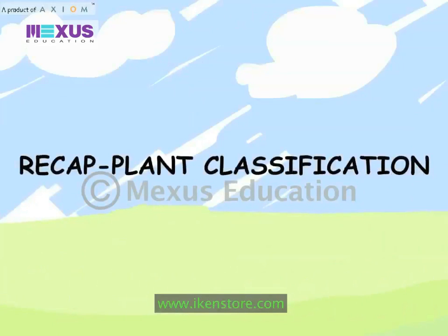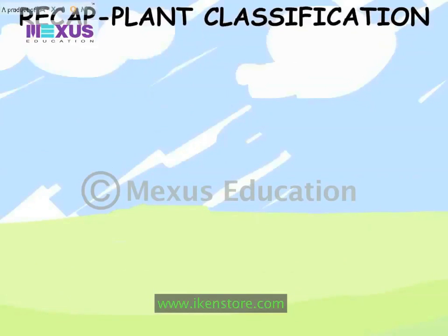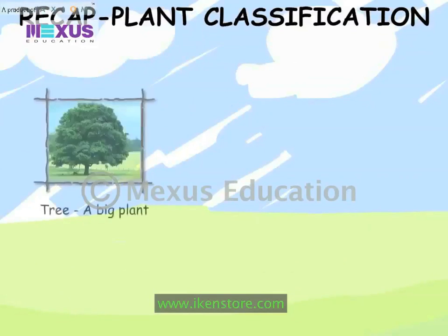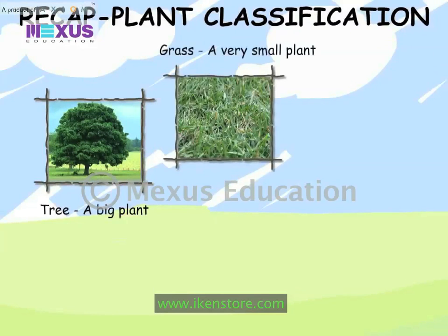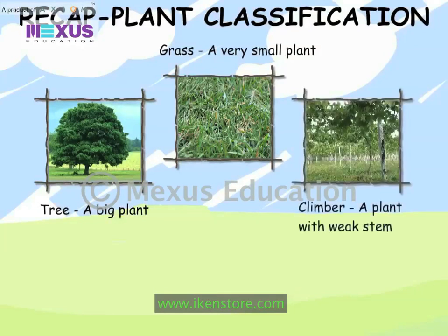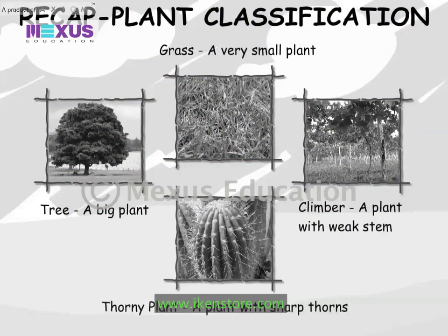Recap — Plant Classification. Tree: a big plant. Grass: a very small plant. Climber: a plant with a weak stem. Thorny plant: a plant with sharp thorns.